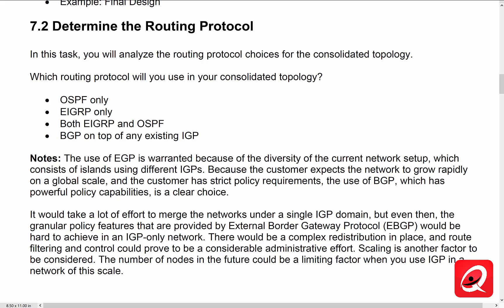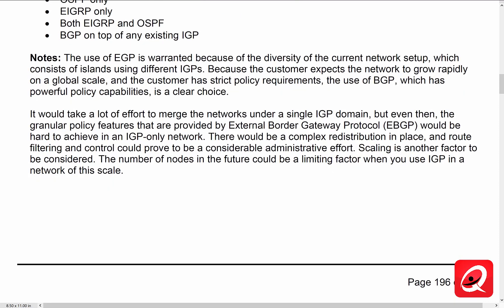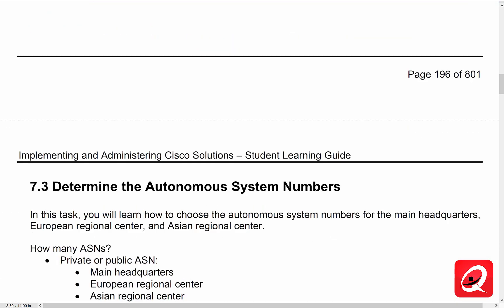It would take a lot of effort to merge the networks into a single IGP domain. BGP provides a much better option because of all the policy restrictions we have in place on primary and secondary routing functions. We would have to do complex redistribution, route filtering, policy-based routing, service level agreements, IPSLA, and all kinds of things in order to get an IGP to do what we want it to do. So the choice is to run BGP on top of our existing IGP architecture.